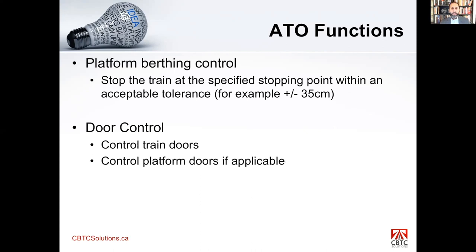Platform berthing and control is the ability to stop the train at the platform within a defined tolerance — typically plus or minus 20 to 50 centimeters. If platform screen doors are present, the train must stop within this window, then open and close doors — including platform doors — in synchronization. That is the ATO function. It doesn't have as many elements as ATP, but it's a very important part of the system because it directly affects the passengers' ride quality.